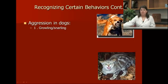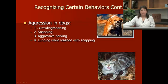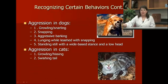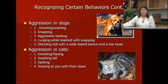Aggression in dogs: you'll see growling or snarling, snapping, and aggressive barking. If the owner has them on a leash, they'll be lunging or trying to get at you, or they'll be standing still with a wide base stance and a low head. Aggression in cats is much the same — growling or hissing, swishing their tail, maybe spitting at you, which is a coughing noise while they're swatting, and swiping with their claws. You want to avoid any animal exhibiting any of those signs.